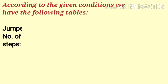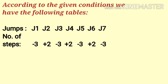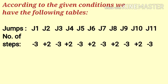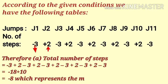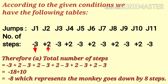Here, jumps taken by the monkey in part 1 to reach water level are 11. Steps moved down are represented by negative integers and steps moved up are represented by positive integers. For example, minus 3 shows that the monkey has taken 3 steps down, and plus 2 shows that the monkey has taken 2 steps up. Therefore, to find the total number of steps, we add all these integers: minus 18 plus 10, which equals minus 8, representing that the monkey goes down by 8 steps.